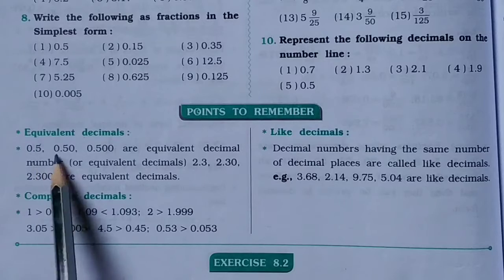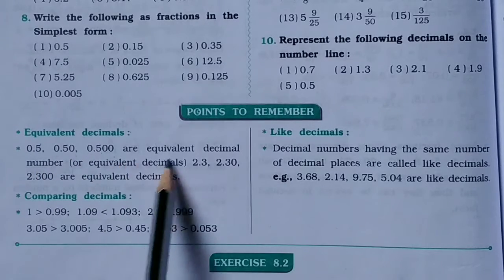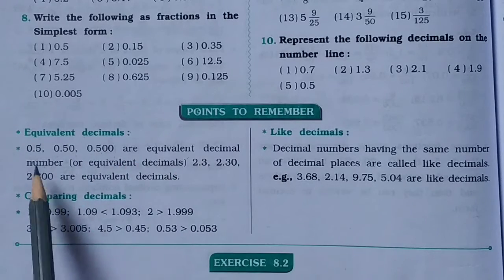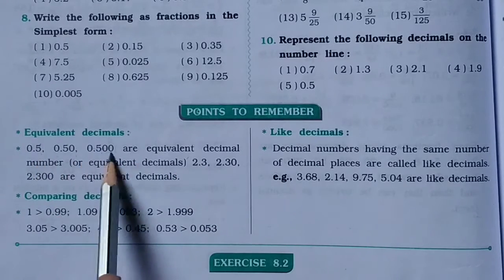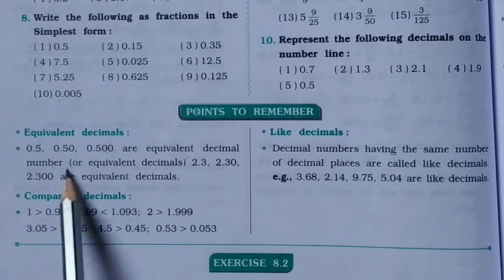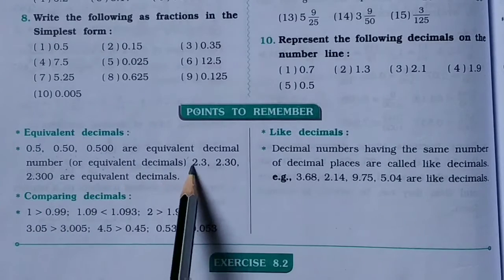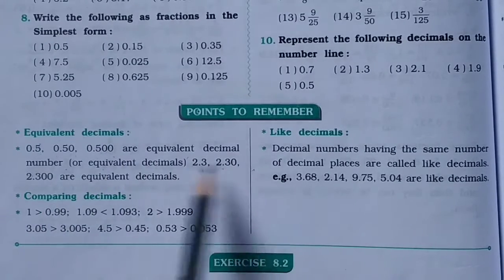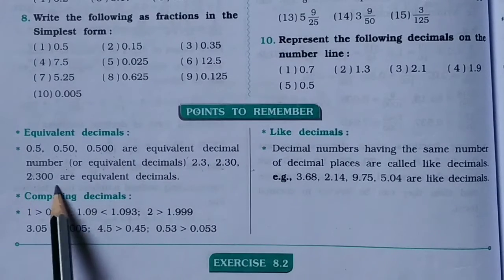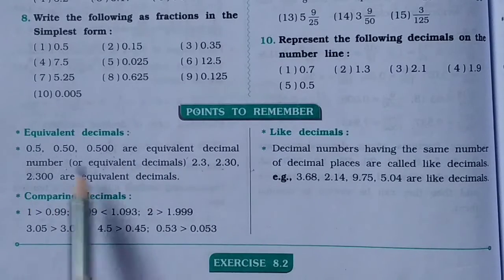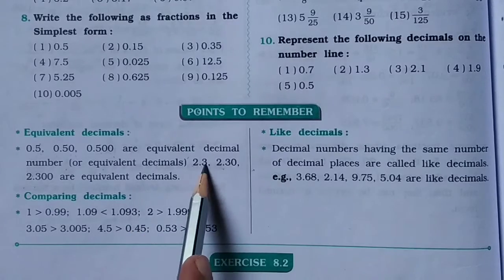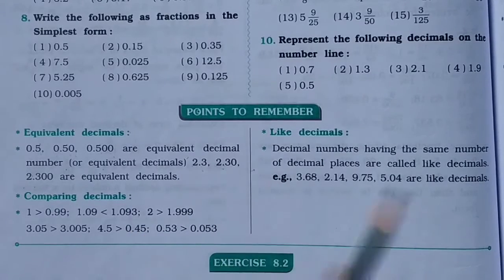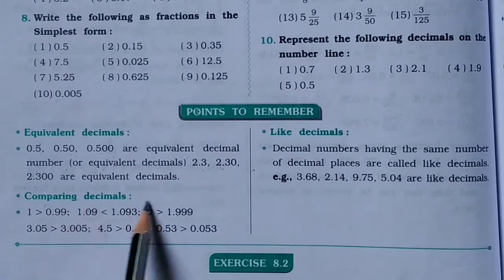Equivalent decimals: 0.5 and 0.50 are equivalent decimals — their values are equal. Similarly 2.3 and 2.30 are equivalent. 0.3 and 0.30 have the same meaning.